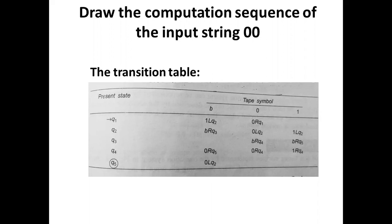Suppose we are in q1 and the read-write head reads the current symbol blank B. It will replace B by 1, the read-write head moves to the left, and it will move to the q2 state.